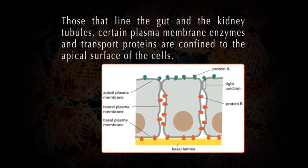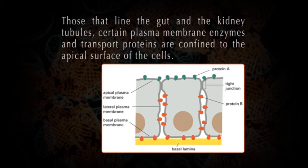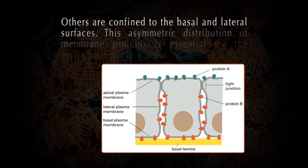The lateral diffusion rates of membrane proteins can be measured using the technique of fluorescence recovery after photobleaching, called FRAP. Cells also have a way of confining membrane proteins to specific domains in a continuous lipid bilayer. In epithelial cells, such as those that line the gut and the kidney tubules, certain plasma membrane enzymes and transport proteins are confined to the apical surface of the cells, whereas others are confined to the basal and lateral surfaces. This asymmetric distribution of membrane proteins is essential for the epithelium to carry out its functions.